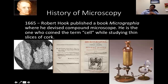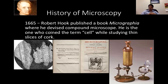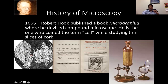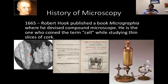Another important name in the history of microscopy is Robert Hooke, who in 1665 published a book called Micrographia, where he devised a compound microscope and observed different structures under it. He is very important because he is the one who coined the term 'cell.' He was looking at slices of cork under the compound microscope and could see multiple porous structures, which he called cells. This term stuck because later other microscopists looking at microorganisms and tissues under compound microscopes also called those individual structures cells — a term we use quite often in science today.